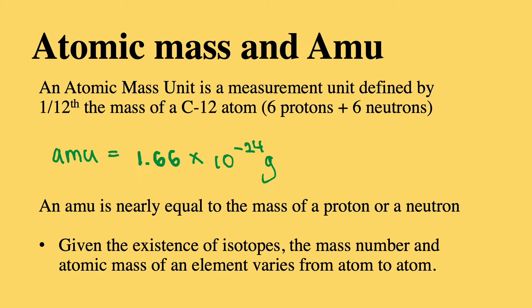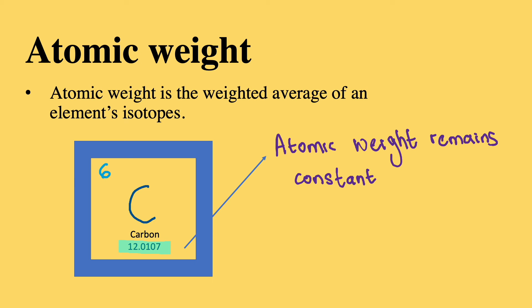The atomic mass unit is nearly equal to the mass of a proton or a neutron. Something to note is that given the existence of isotopes, the mass number and atomic mass of an element varies from one atom to another. Atomic weight, on the other hand, remains constant for a given element.